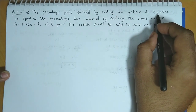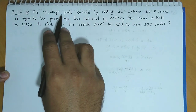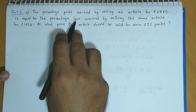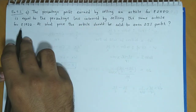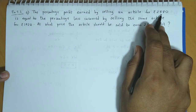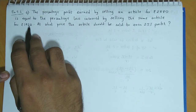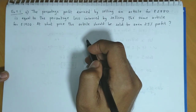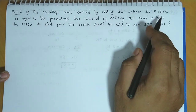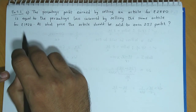यानि अगर हम article को 2880 पर बेचते हैं, तो हमें जो profit percent होगा, that is equal to the loss percentage if the article is sold at 1920. यानि 2880 पर हमें जितना profit percent हो रहा है, उतना ही 1920 पर हमें loss percentage generate हो रहा है. So, the profit percent at 2880 is equal to the loss percentage at 1920.